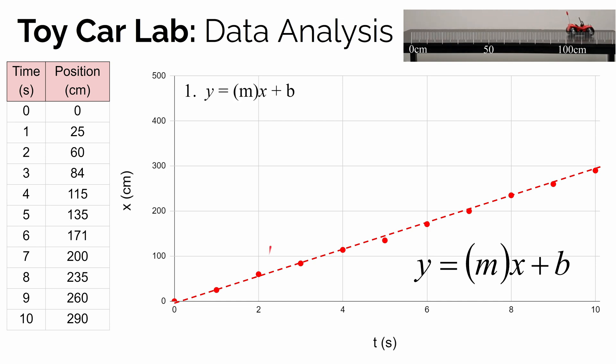The first step, if we have a linear relationship, is just writing down the slope-intercept form. So step one, write it down: y equals m times x plus b. m represents the slope of the line, and b represents the y-intercept of the line, where it crosses that vertical axis.